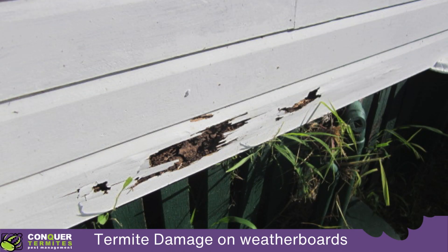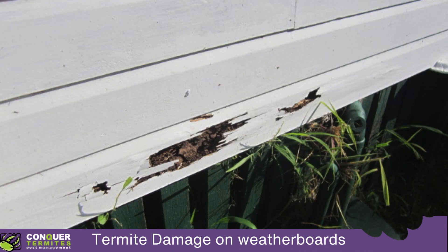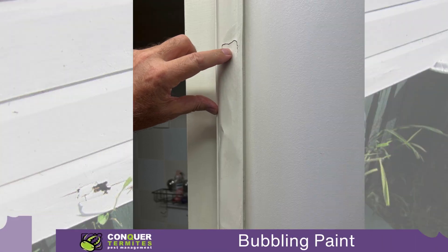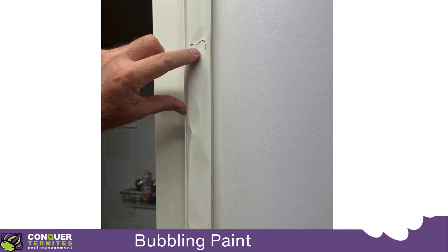This is the outside of a home and you can see some damage on the weather boards. This is a trim timber and you can see some bubbling forming.